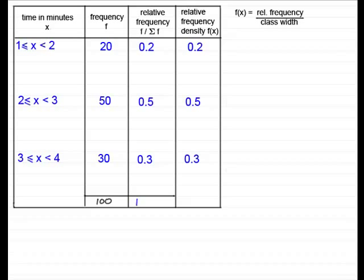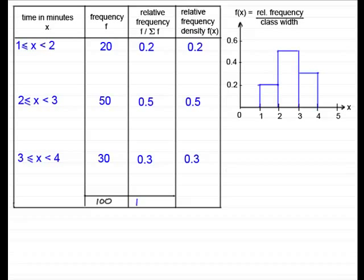Now, suppose we drew a graph of the relative frequency density f of x against the time in minutes x. Then we would get a histogram, something like this. We would have the 0.2 as being the relative frequency density over that interval 1 to 2. And similarly, 0.5 over the interval 2 to 3 and 0.3 over the interval 3 to 4 minutes. Alright?